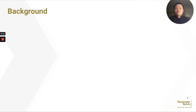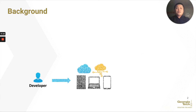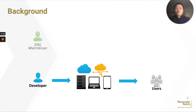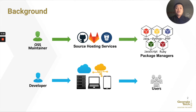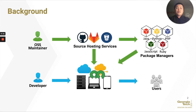In the software development process, developers write software that runs on devices and is used by end users. OSS maintainers publish their code to source hosting services such as GitHub and then host them on package managers such as NPM. Developers reuse OSS maintainers' code to avoid reinventing the wheel.